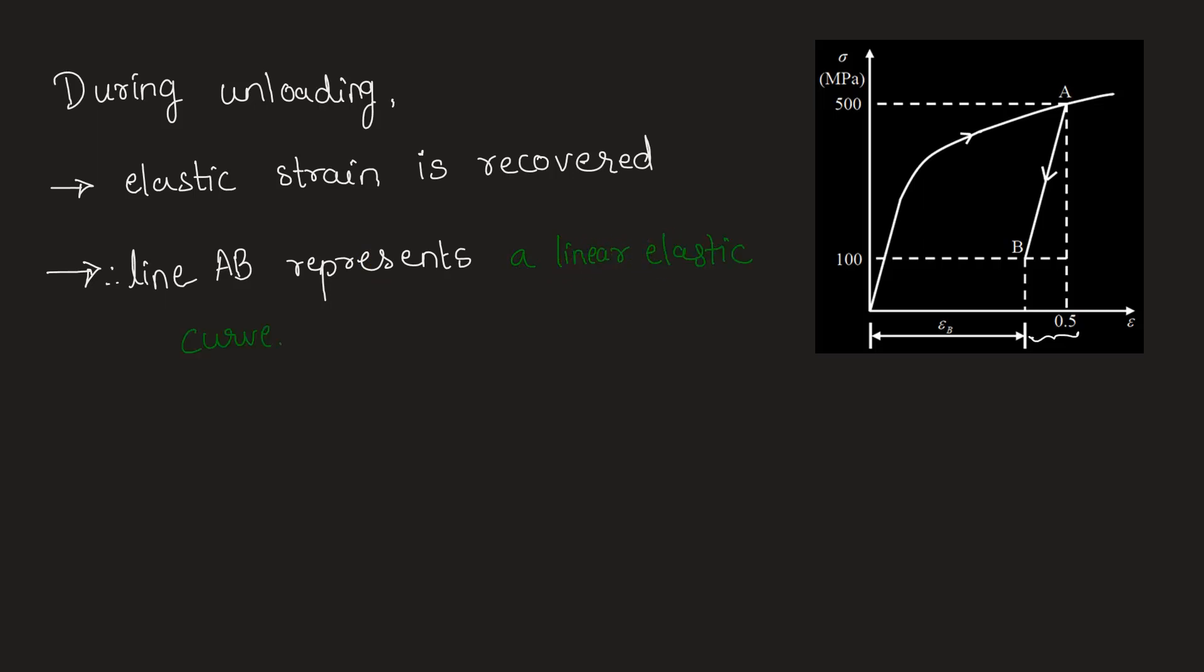Hence we see that during unloading, elastic strain is recovered. So along the line AB, there is a recovery of strain. As the elastic strain is recovered, we see that line AB represents a linear elastic curve. If this line represents a linear elastic curve, its slope should be Young's modulus E, which is equal to 200 GPa.